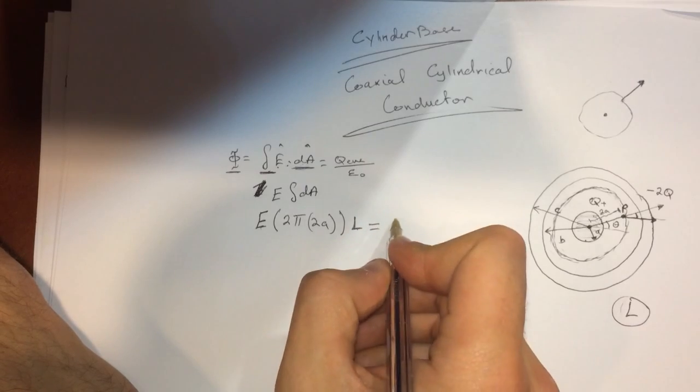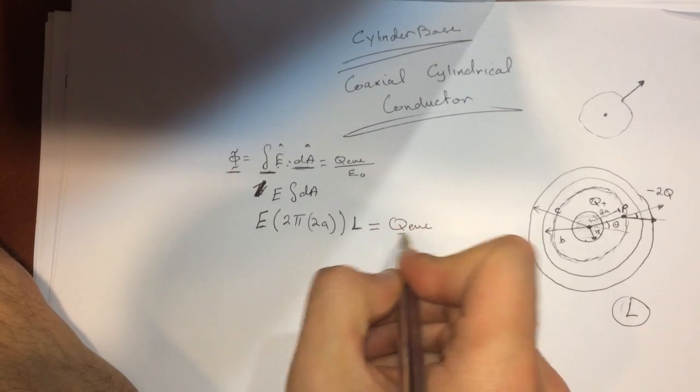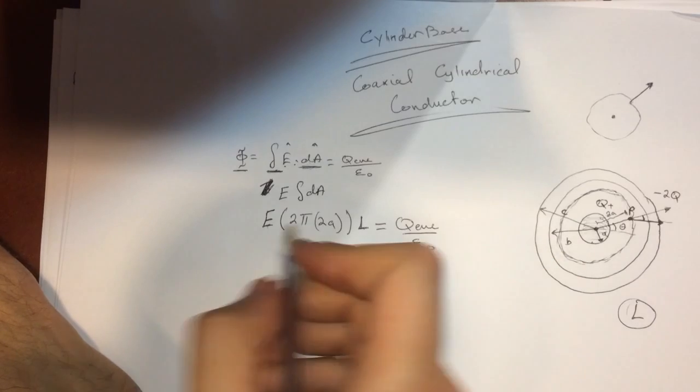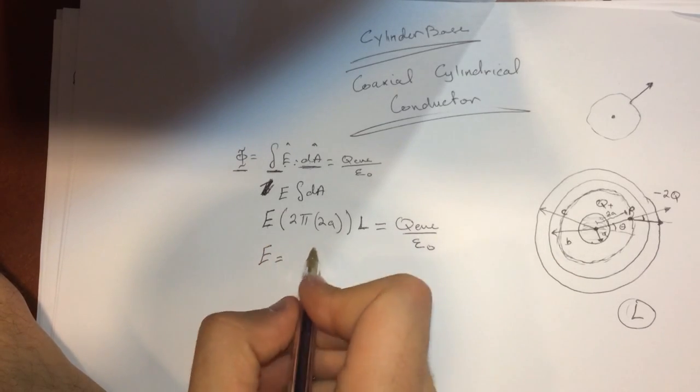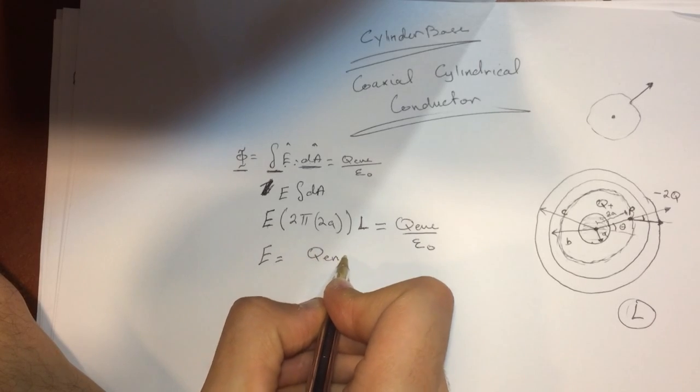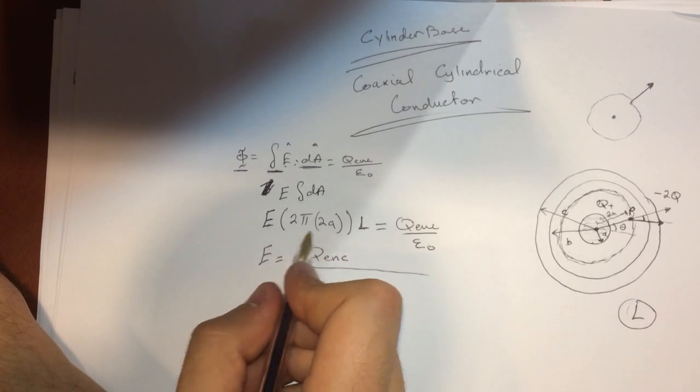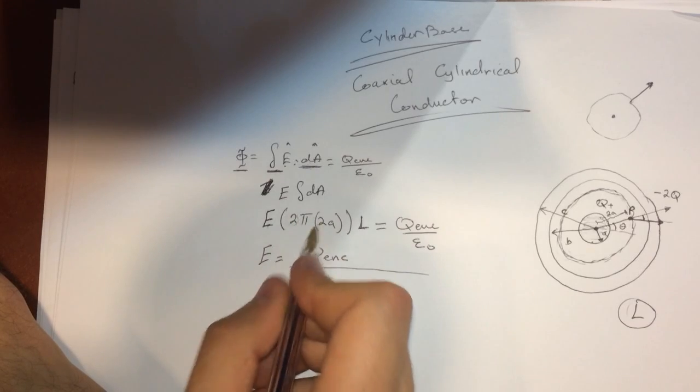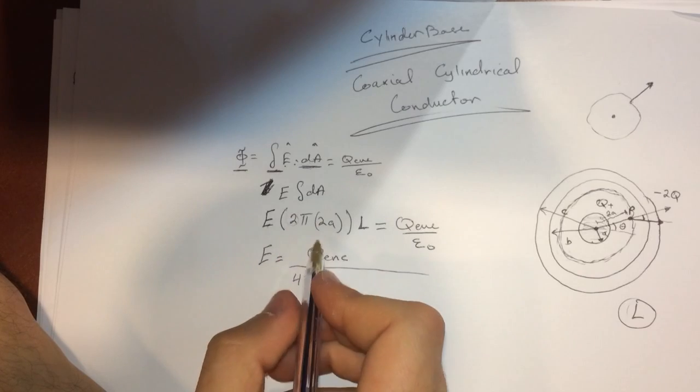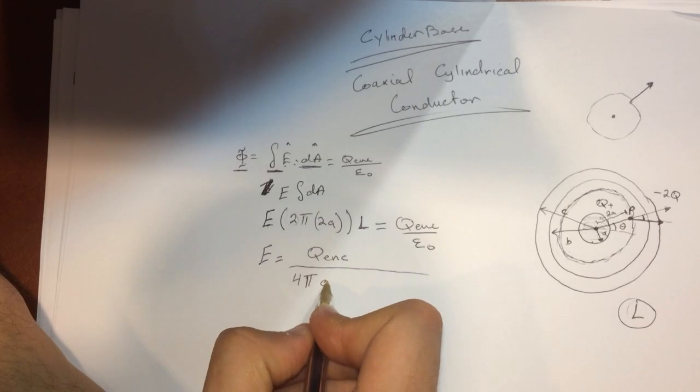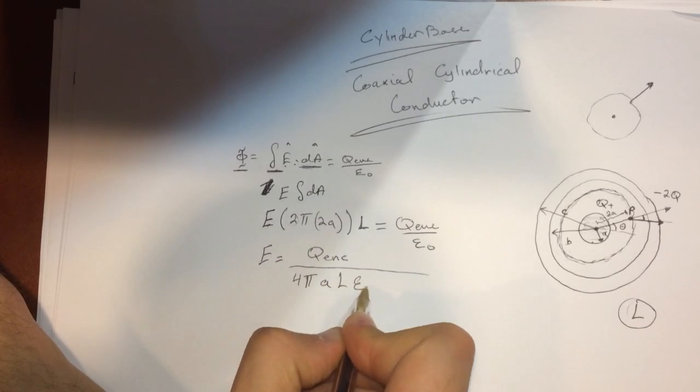So this will be equal to the Q enclosed divided by epsilon naught. So we can write that E will be equal to Q enclosed, and then divide by, this will be 4, so it's 4 pi, A, L, epsilon naught.